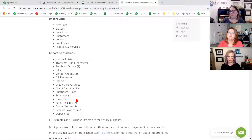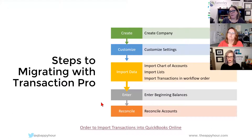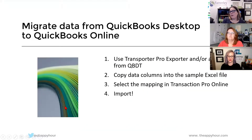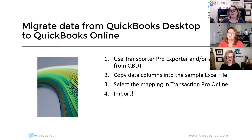I love that when we get into the demo, Transaction Pro actually does that validation for you — because if you try to bring something in and it's not working or not mapped correctly, you're going to know. It even tells you what you need to do to fix it, which is really great. So migrating data from QuickBooks Desktop to Online — you can use Transaction Pro Exporter and/or an IIF file from QuickBooks Desktop. If you have an IIF file, you could export that. There's a beautiful mapping Excel file that Transaction Pro has created that you can just copy data into and then bring into QuickBooks Online.